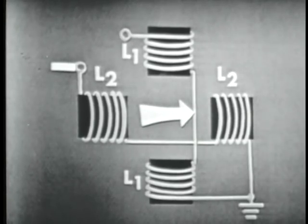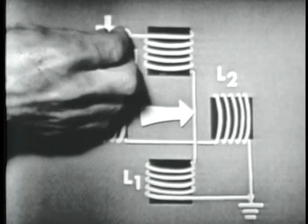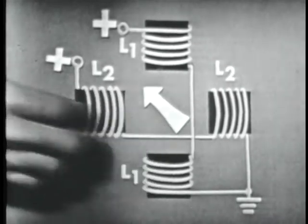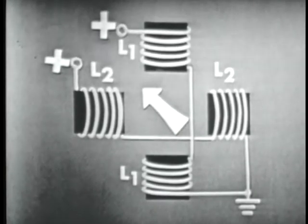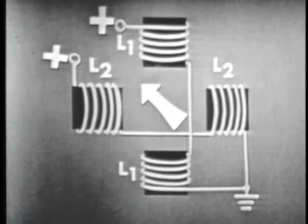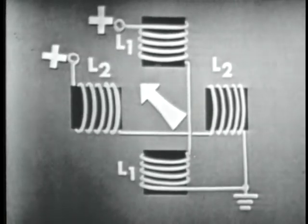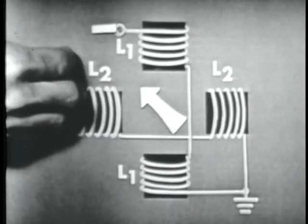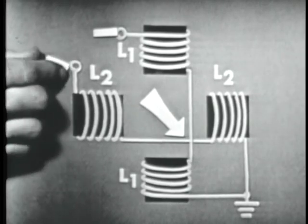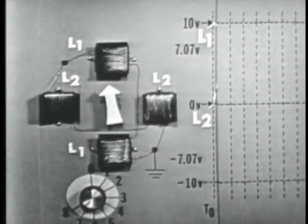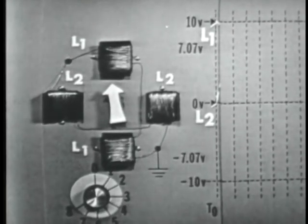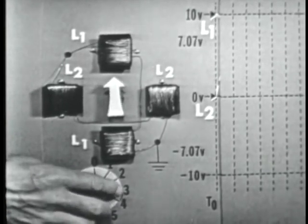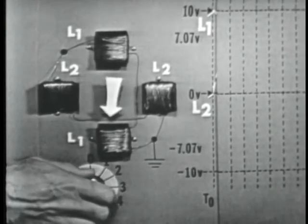We can also energize both coils at the same time and produce four more directions. By supplying both L1 and L2 with this polarity, L1 produces an up direction and L2 produces a left direction, so the two equal fields combine and move up and to the left at that angle. Reversing the polarity on both coils reverses the direction to down and to the right. We can also produce counterclockwise rotation by reversing the direction of the windings on L1 and L2, but we chose clockwise.